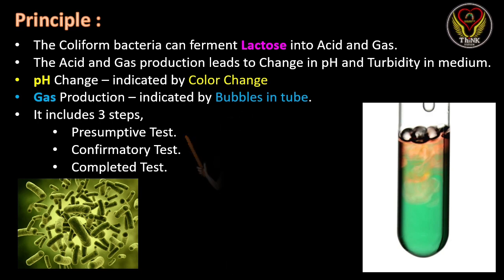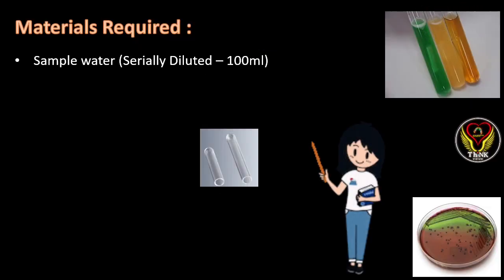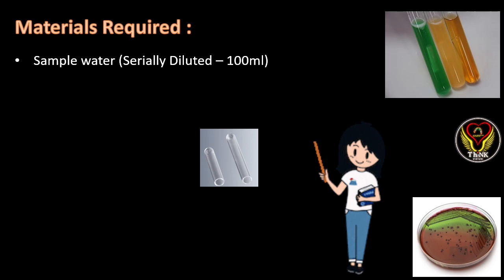This technique includes three major steps: the first step is the presumptive test, the second is the confirmatory test, and the final is the completed test. The first important material required for carrying out this test is the water sample. We cannot use the water sample as such — we have to serially dilute it to 100 ml, because the results are reported as the number of coliforms per 100 ml.